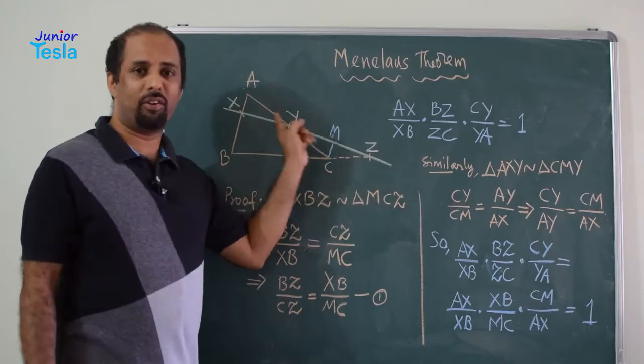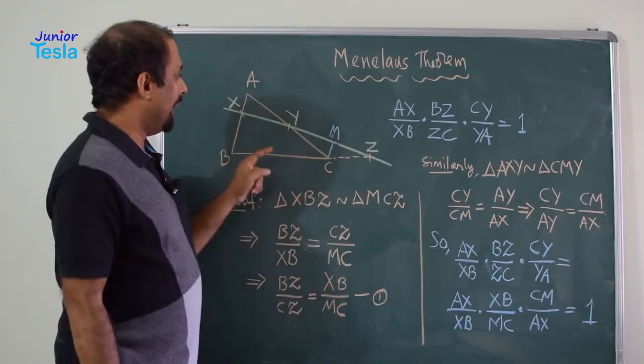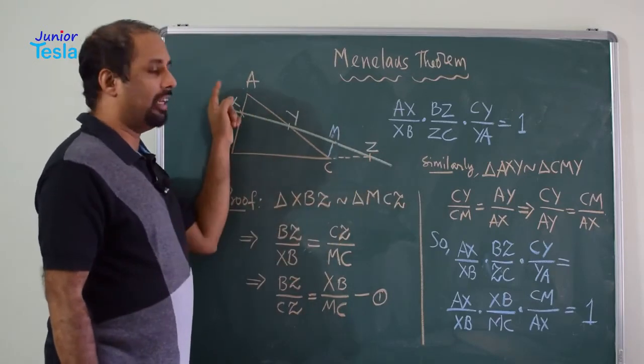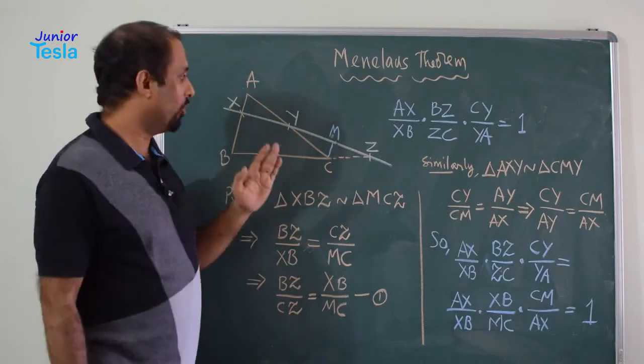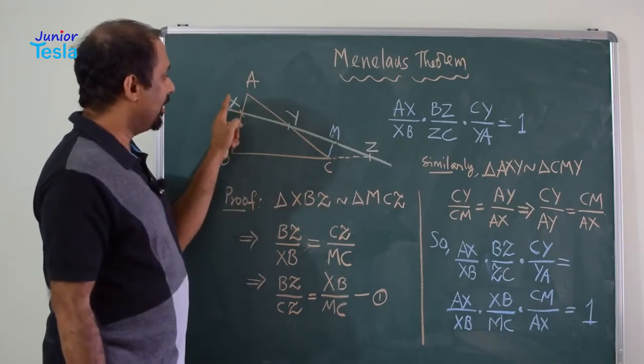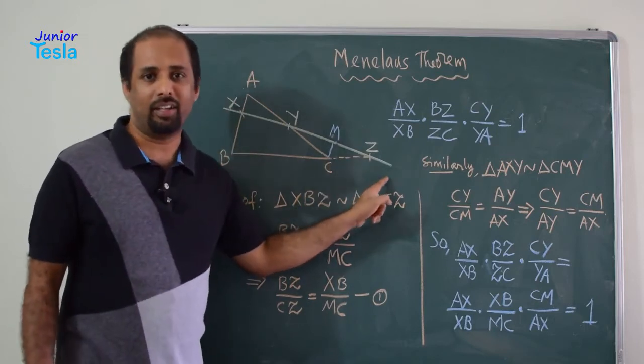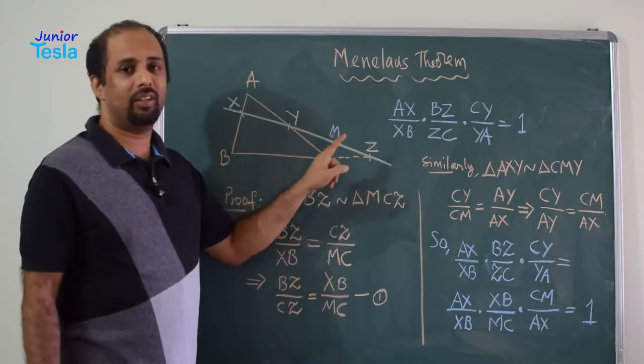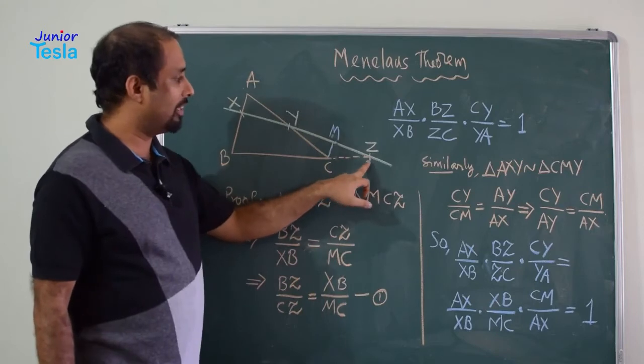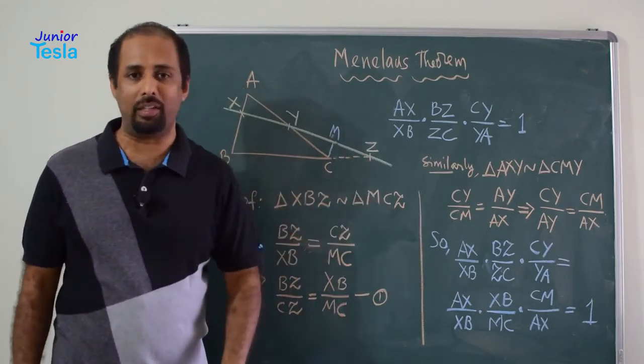So, this is the line segment which is drawn in the green color and it is cutting the triangle ABC in the three sides. AB is cut at X, AC is cut at Y and BC is cut at Z. Now, you can see this only if you extend the side, third side BC.